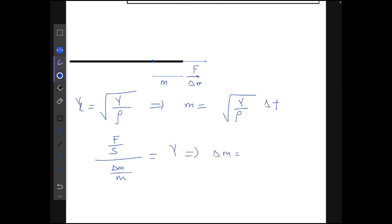And substituting the value of m from above, what we get is Δm = (F/SY) × √(Y/ρ) × Δt, which is equal to (F/S) × √(Y/ρ) × Δt.